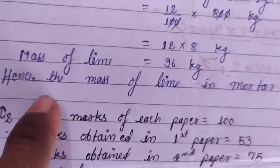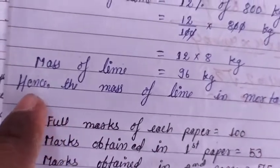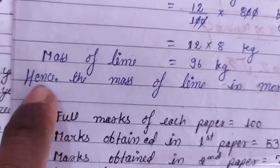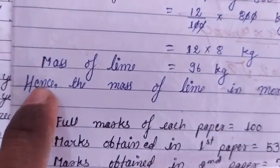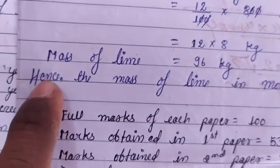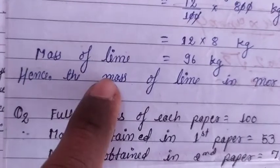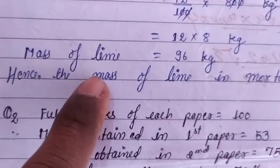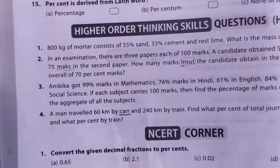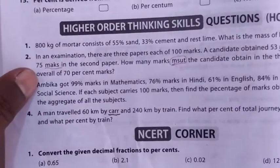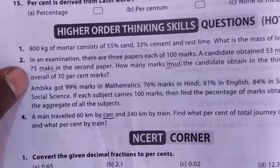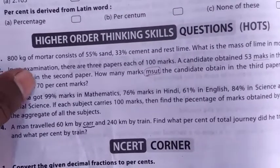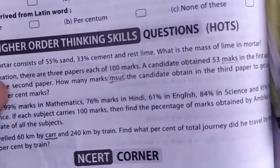This closing statement is a must step — we have to compulsorily add it. Now, the next question: In an examination, there are three papers, each of 100 marks.